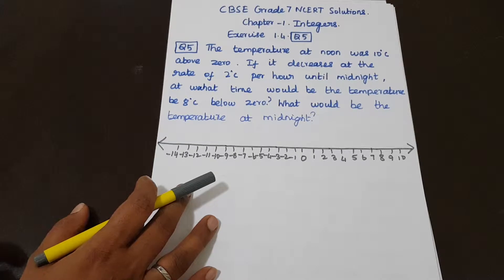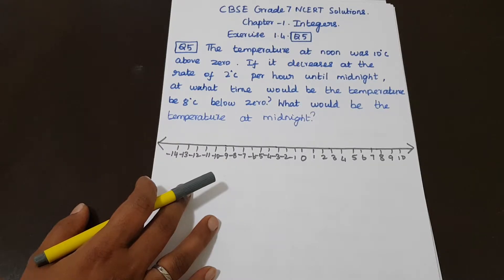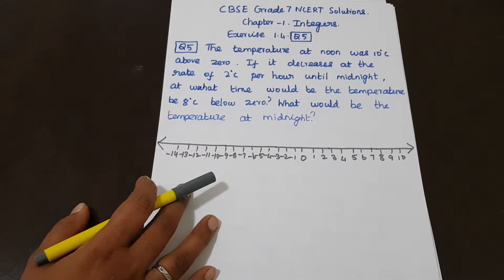The temperature at noon was 10 degree Celsius above 0. If it decreases at the rate of 2 degree Celsius per hour until midnight, at what time would the temperature be 8 degree Celsius below 0? What would be the temperature at midnight?